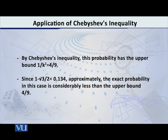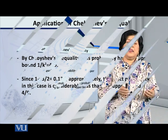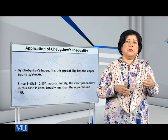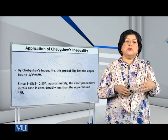So you can see there is no contradiction. We took a simple PDF for which it was easy to compute the exact probability, and it came out to be 0.134. The Chebyshev inequality says that whatever the probability is, it cannot be greater than 0.444. Our value is considerably less — it is not greater than 0.444. Similarly, for any other choice of k, the exact probability will always be lower than the upper bound given by Chebyshev's inequality.